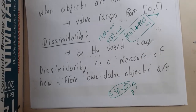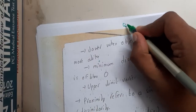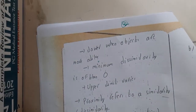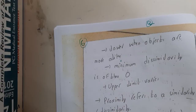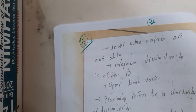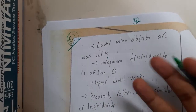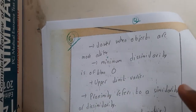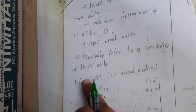Dissimilarity is a measure of how different two data objects are. When objects are more alike, the dissimilarity value is near zero. The minimum dissimilarity is zero and the upper limit varies. I will be going through six different methods for calculating similarity and dissimilarity, so please make sure you are clear with these concepts as I will be taking six different lectures on them.